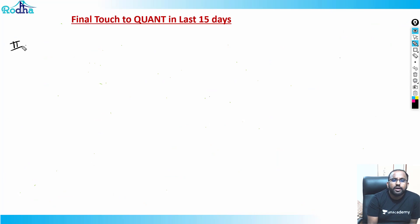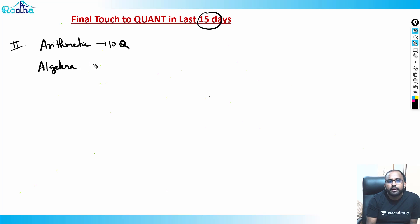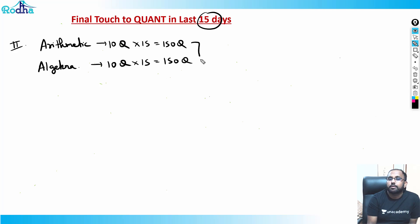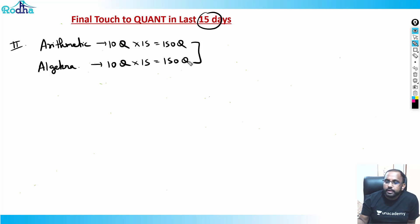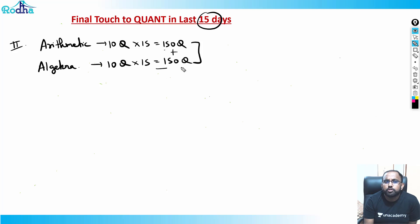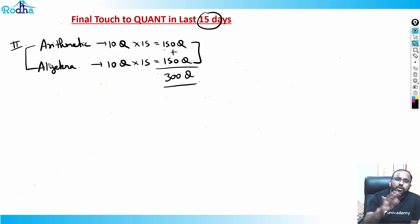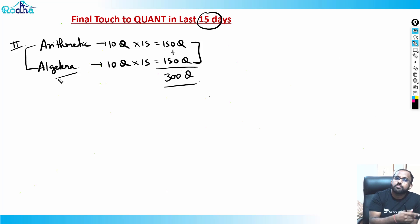Now, which topics should you focus on? Looking at last year's trends: arithmetic plus algebra. In the last 15 days, solve 10 arithmetic questions and 10 algebra questions every day — that's 150 questions of arithmetic and 150 of algebra before the exam. In CAT, every alternate question will likely be arithmetic or algebra, so stay in great practice. Algebra covers sequences, series, functions, graphs, polynomials, logarithms, quadratic equations — touch everything.